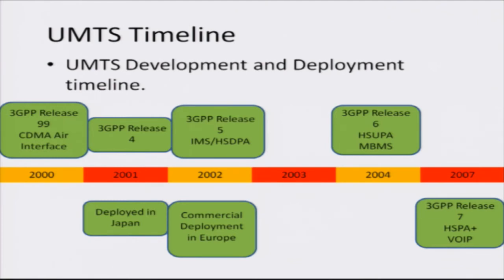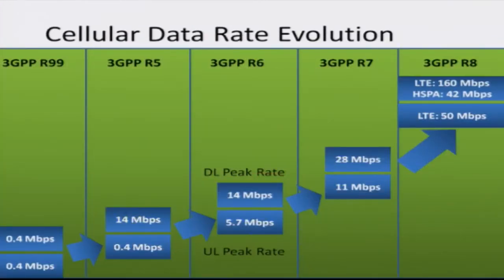3GPP release 99 was developed, followed by 3GPP release 4 in 2001 and commercial deployments in Japan, followed by deployment in Europe in 2002. Release 5, known as HSDPA — high speed downlink packet access — increases the data rate further. Around 2004, the uplink counterpart, release 6, was formalized, and release 7 further increased the data rate with HSPA plus, or high speed packet access plus, which supports a variety of features.